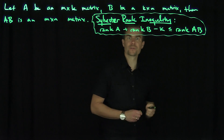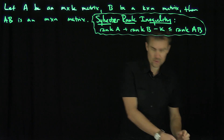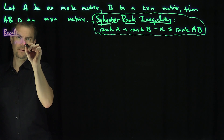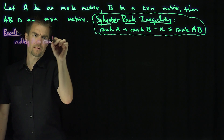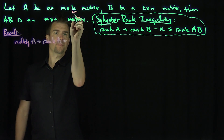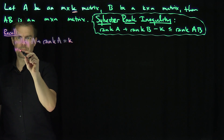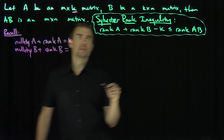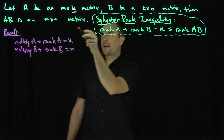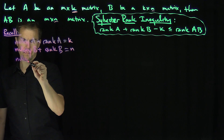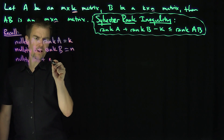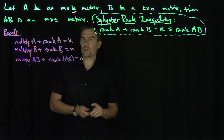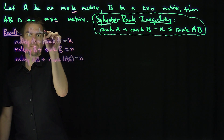So let's prove it. The idea is to use the rank-nullity theorem. Recall that the nullity of A plus the rank of A equals the dimension of the input space of A, which is K. The nullity of B plus the rank of B equals N. And since AB is an M by N matrix, the nullity of AB plus the rank of AB also equals N. So I've used the rank-nullity theorem three times.